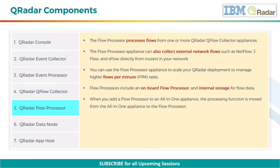Next, the Flow Processor processes flows from one or more QRadar QFlow Collector Appliances. The Flow Processor Appliance can also collect external network flows such as NetFlow, JFlow, and SFlow directly from routers in your network. You can use the Flow Processor Appliance to scale your QRadar deployment to manage higher flows per minute rates.